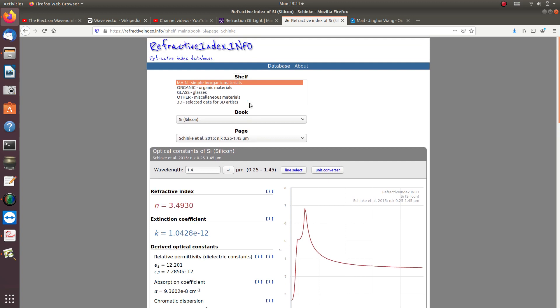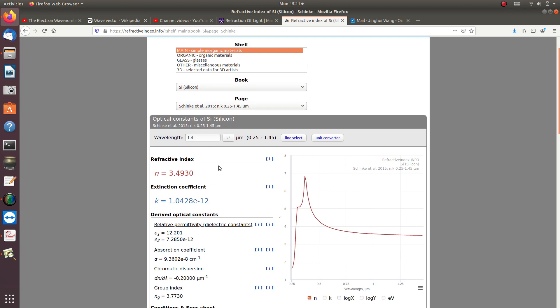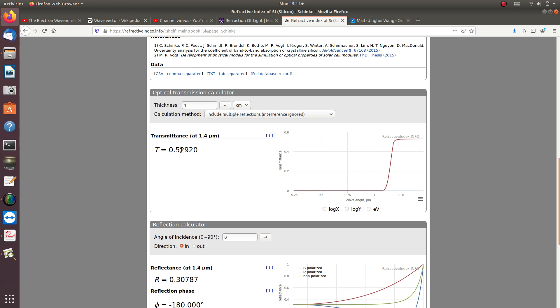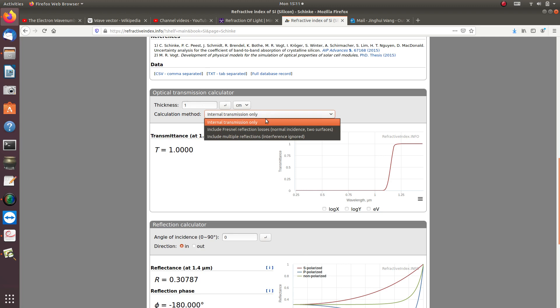If you go to the website and look at silicon material and choose wavelength 1.4, there are parameters like the refractive index. You can see the transmittance. If it is internal transmission only, which means one reflection process from the front and end surface, most light is transmitted through the material, which is one centimeter thick.